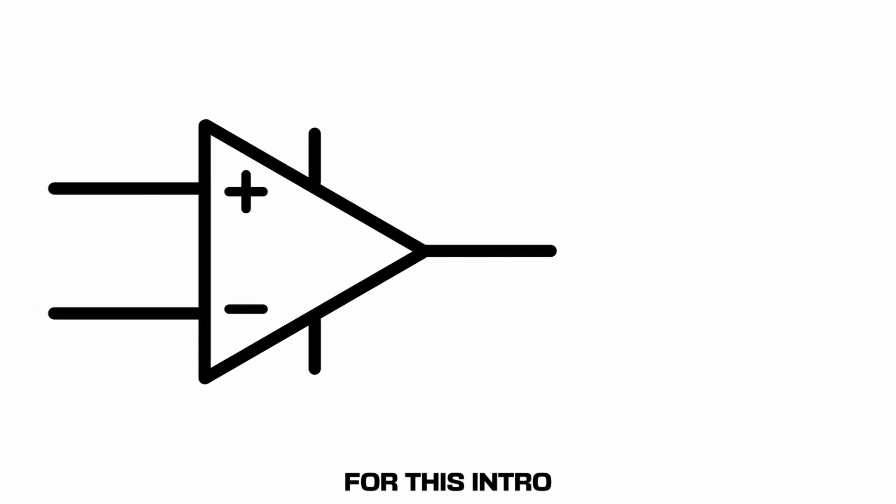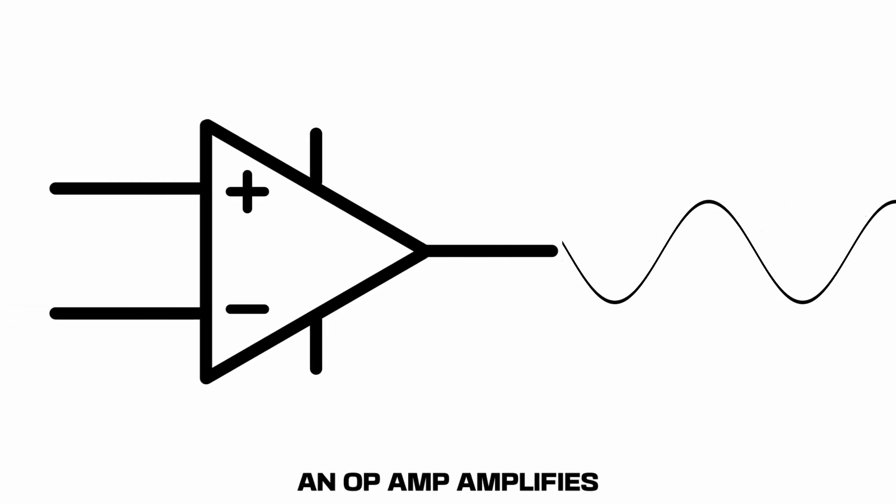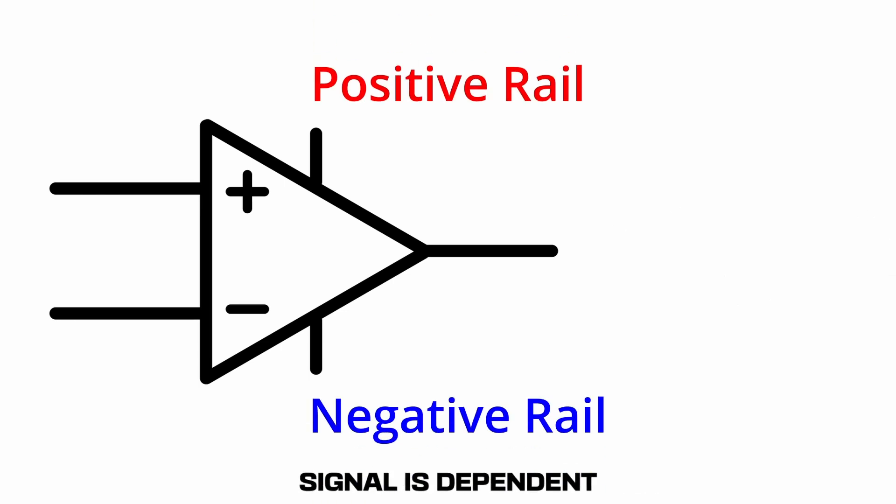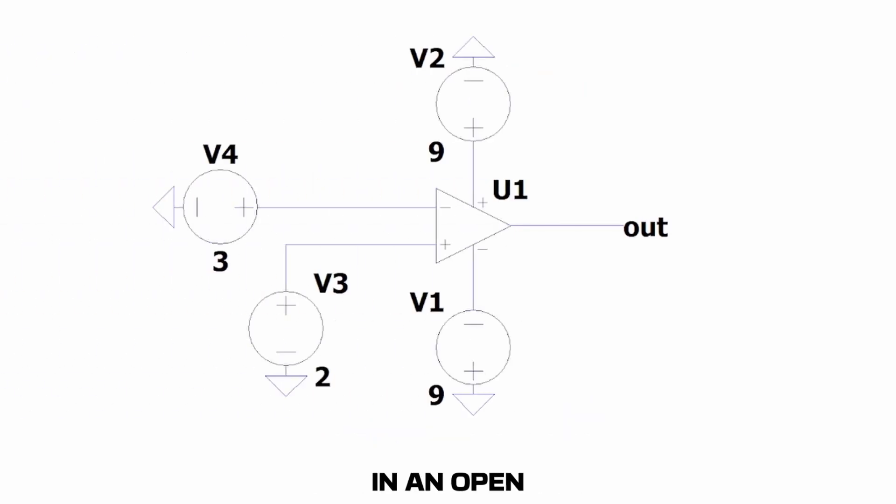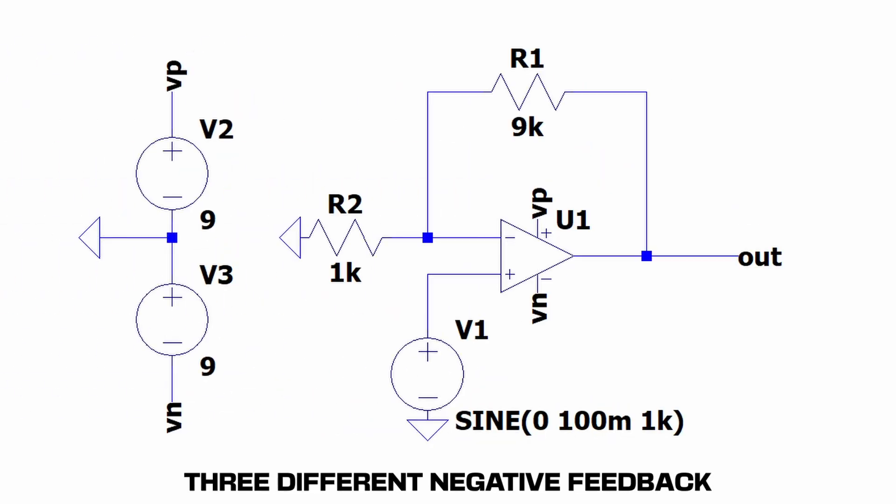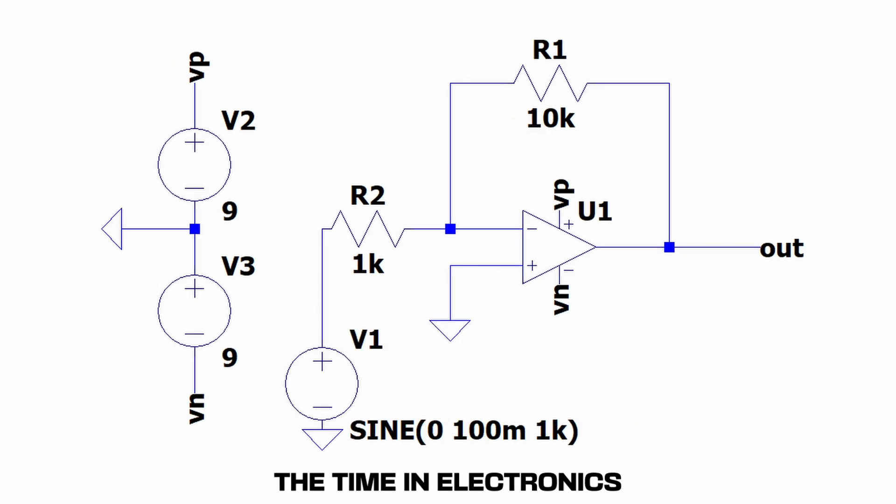For this intro to op-amps video, I hope you now understand that an op-amp amplifies a voltage signal. We also learned that the most amplification you can get from an input signal is dependent on your power supply. We took a glance at op-amps in an open-loop configuration with no feedback, as well as three different negative feedback configurations used all the time in electronics.